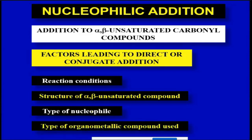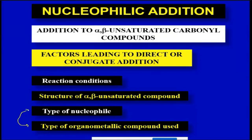Finally, if you use an organometallic compound as the nucleophile with an alpha-beta unsaturated compound, that is a special case. While an organometallic compound is a type of nucleophile, it belongs to a different class. There are some differences in behavior that we will discuss in detail separately.